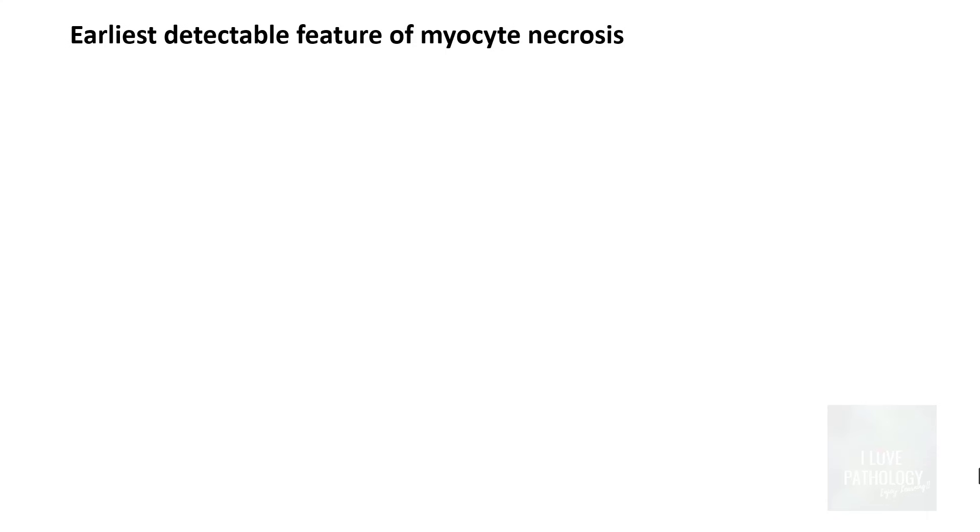Now what is the earliest detectable feature of myocardial necrosis? Let's understand this. To begin with, there is loss of integrity of the sarcolemmal membrane, which means the integrity of sarcolemmal membrane of the myocardium is disrupted.